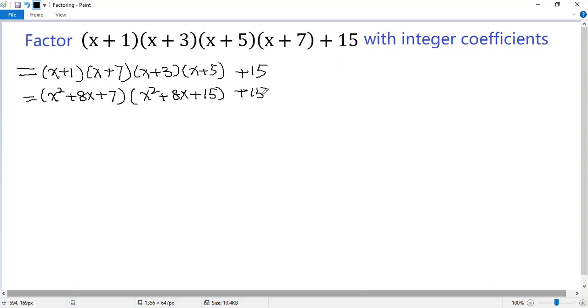At this point, we do a substitution to simplify the expression. We take the new variable t as the average of the two factors, so it is x squared plus 8x plus 11. So the first factor becomes t minus 4, the second t plus 4, and then plus 15.